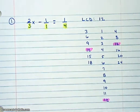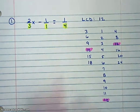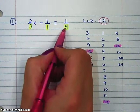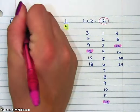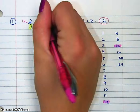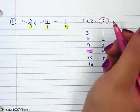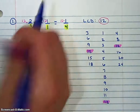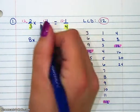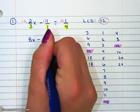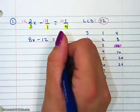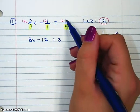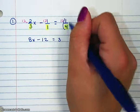And that's where I got my LCD: 12. The reason this is important is because we're going to multiply every single number by 12. So this first number I'm going to multiply by 12, this 1 by 12, and this 1 fourth by 12. So 12 times 2 thirds is going to give us 8x. Note that it's 12 times the entire fraction, not just 12 times 1.